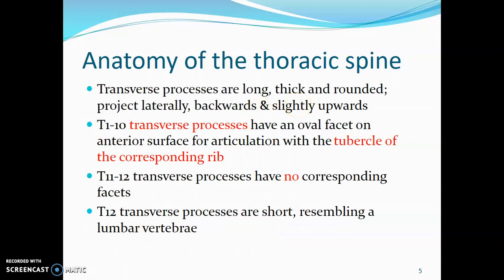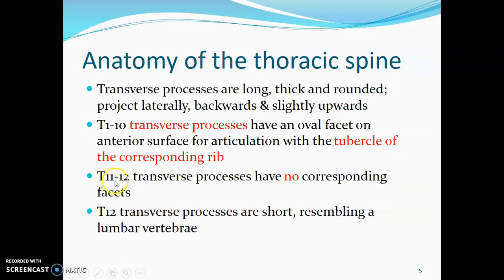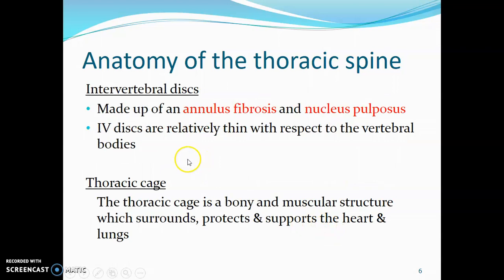The transverse processes of the thoracic vertebra are long, thick, and rounded, and project laterally, backwards, and slightly upwards. The transverse processes of T1 to T10 have oval facets for articulation with the tubercle of a corresponding rib — for example, the costal facet on T1's transverse process articulates with the tubercle of the first pair of ribs. T11 and T12 have transverse processes but do not have corresponding facets. T12 has a short transverse process and resembles a lumbar vertebra, which lacks the articular facets.